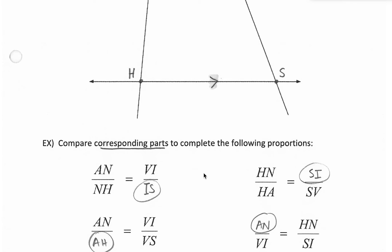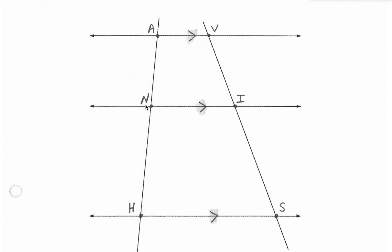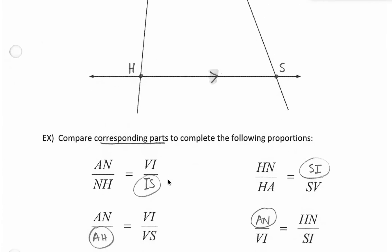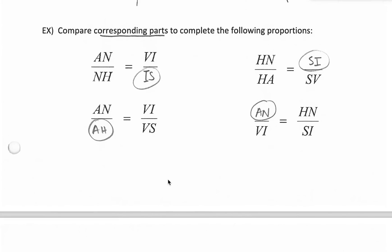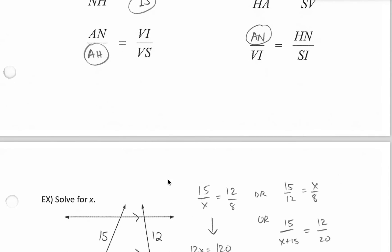And then lastly, HN to SI. HN to SI. So bottoms left to right. We must need the tops compared left to right. So AN to VI. So hopefully you see that that's very similar to what we're doing in the previous examples.